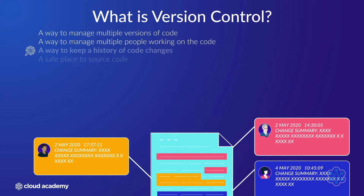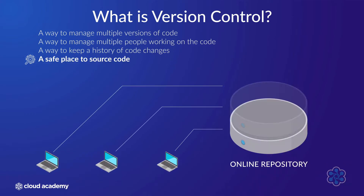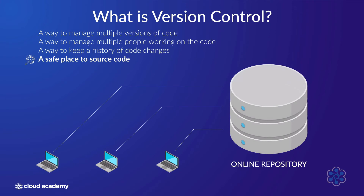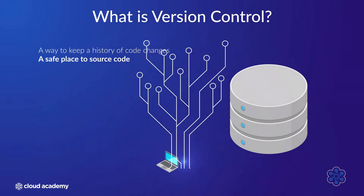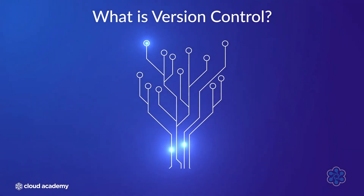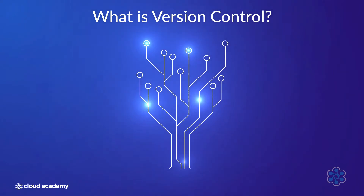While not an explicit element of version control, online code repositories have become synonymous with it and serve as a backup vehicle for source code. As will become apparent, the tree analogy is often used when talking about version control.